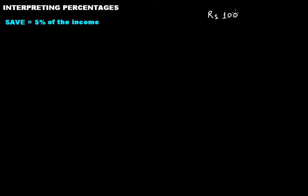It means that if your income is rupees 100, then on this rupees 100 you save rupees five. That's what five percent in this condition means. So if you are asked to interpret percentage in this given condition, you will say that if I save five percent of my income, then that means if I earn rupees 100 then I save rupees five.